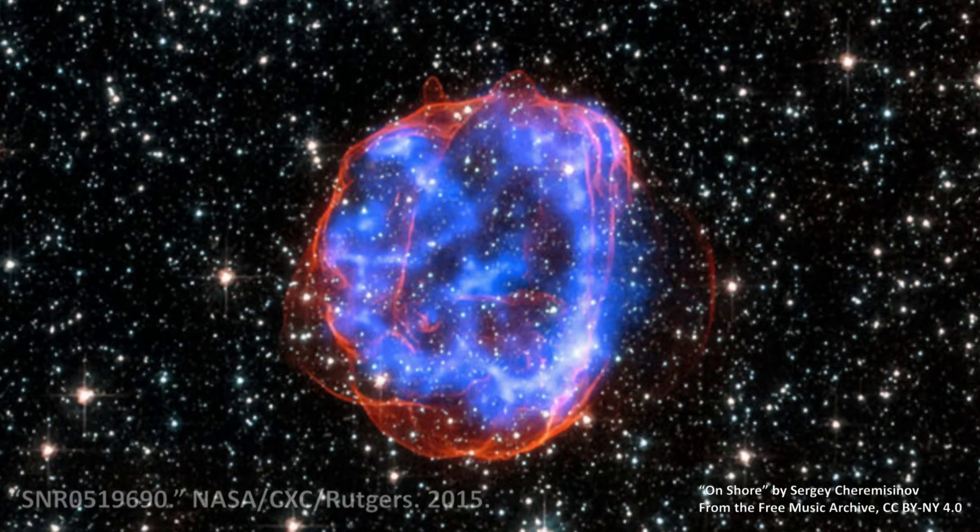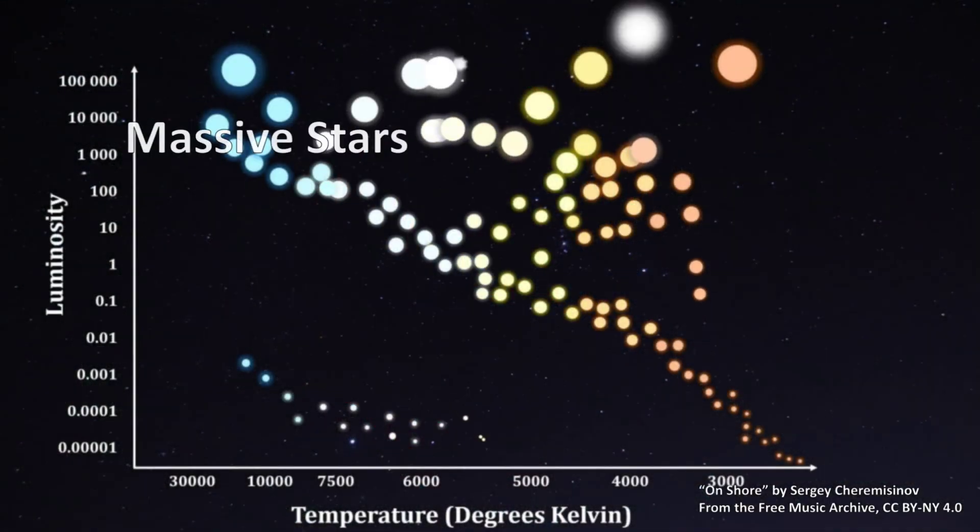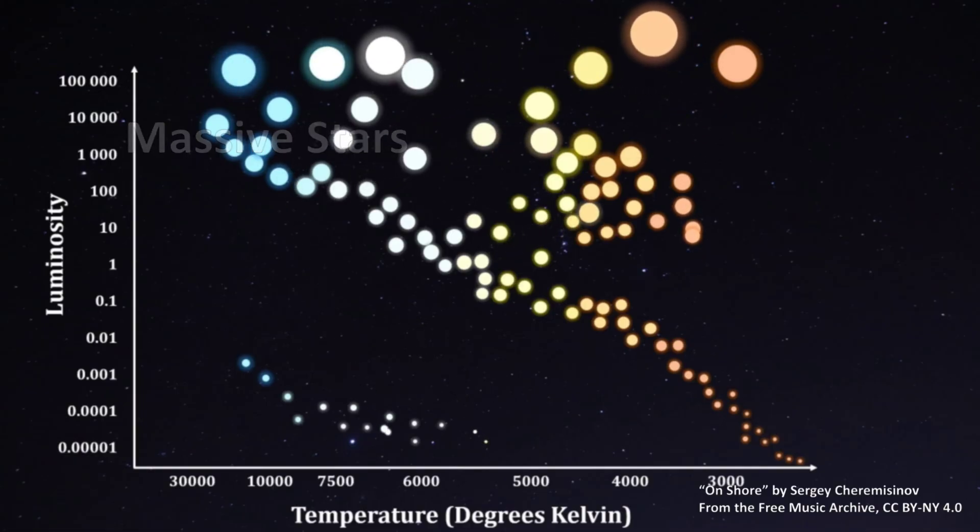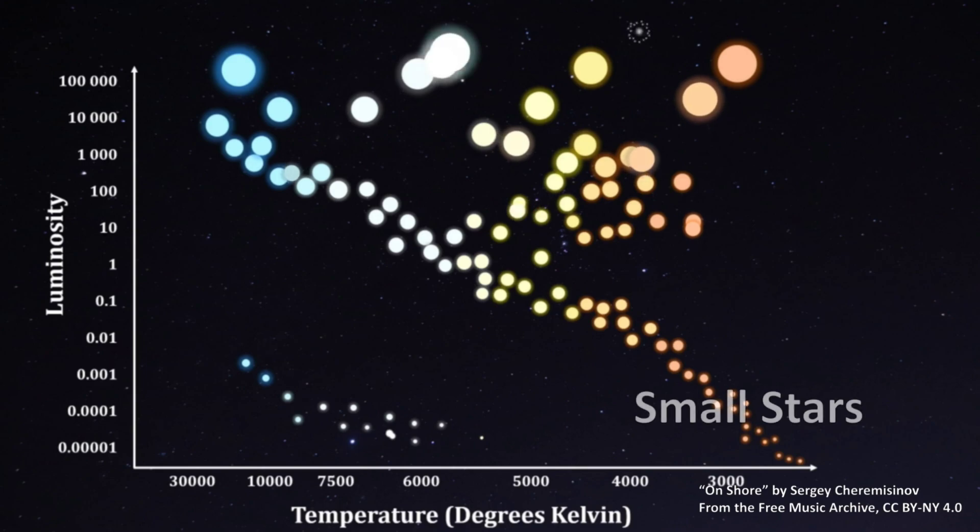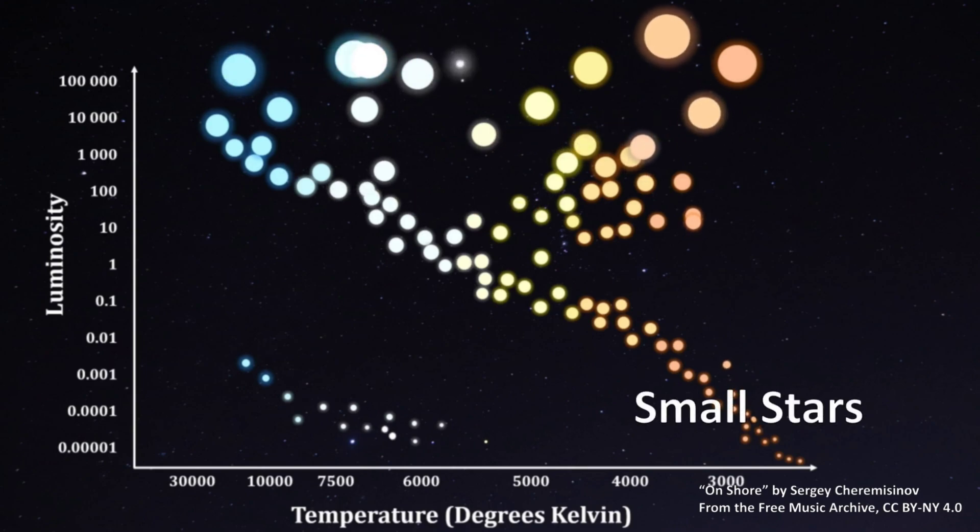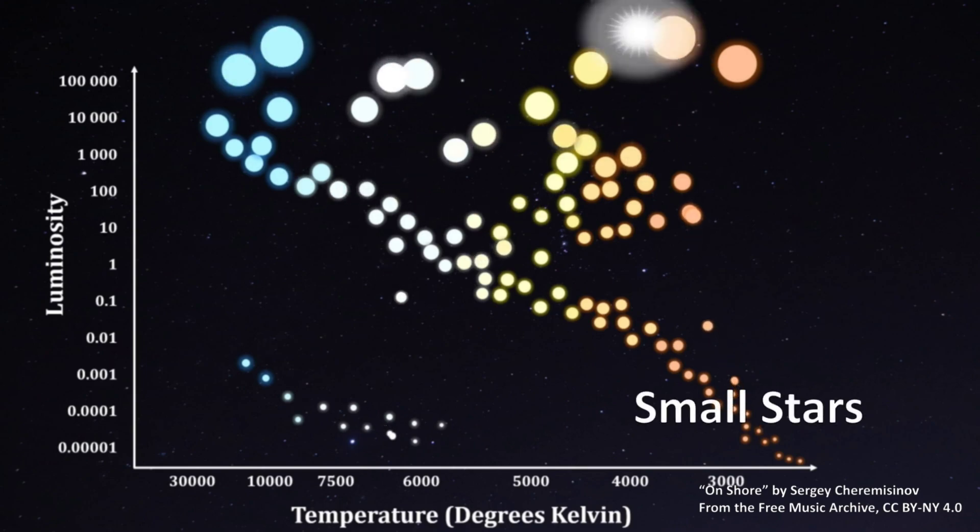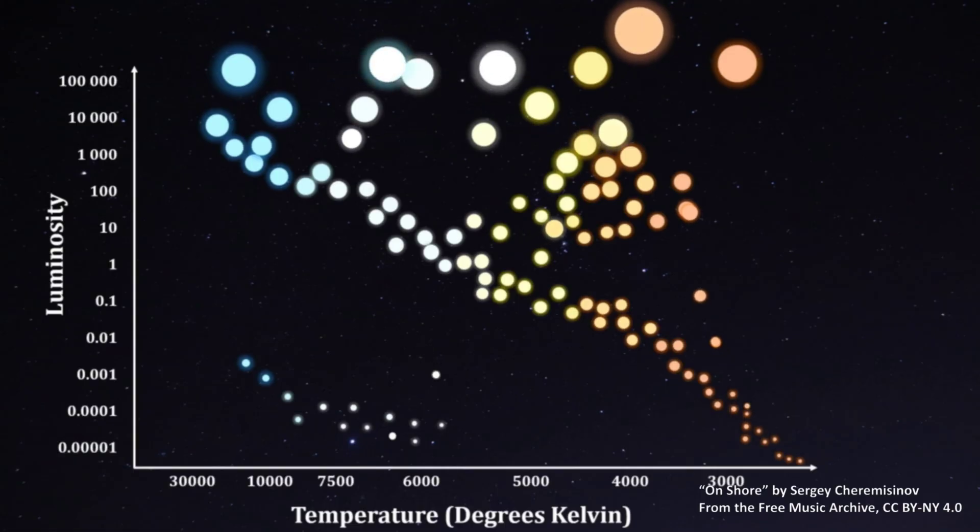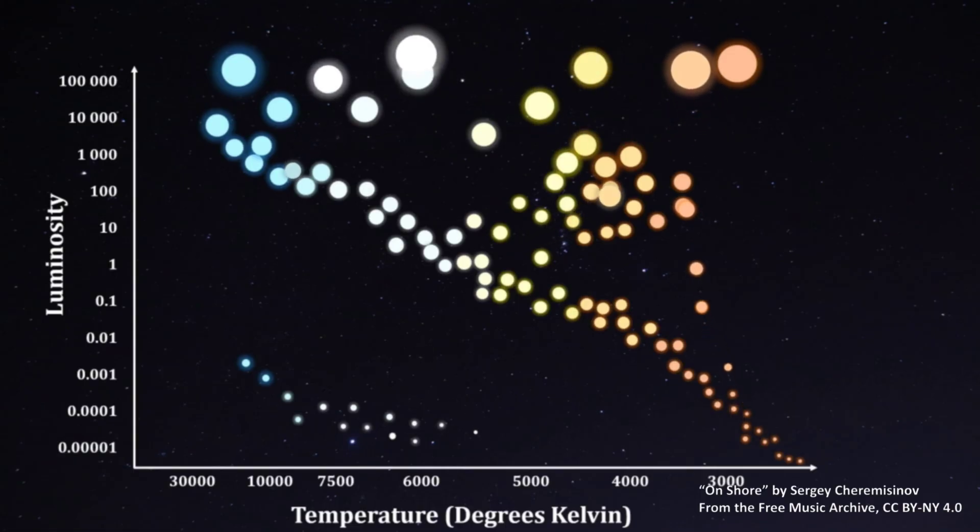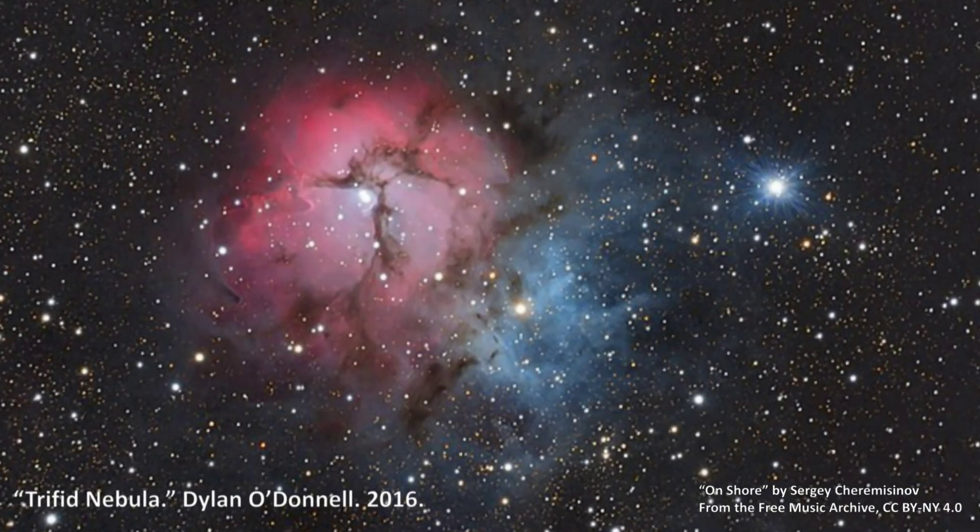So, to summarize, massive stars are extremely hot and luminous, but they live short lives and produce violent supernovae when they die. Smaller stars are cooler and less luminous. However, they live longer lives and produce white dwarfs. And pretty much any star will probably produce a nebula when it dies.